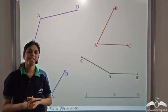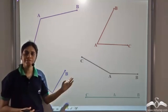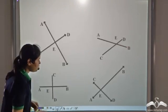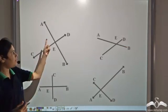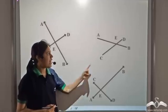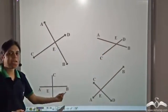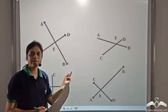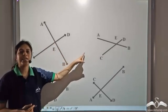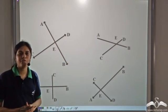We know that angles are formed when two rays come together and have a common endpoint. We also know that angles are formed when two lines meet, or two line segments meet. So when these lines and line segments meet, they form not just one but four angles.